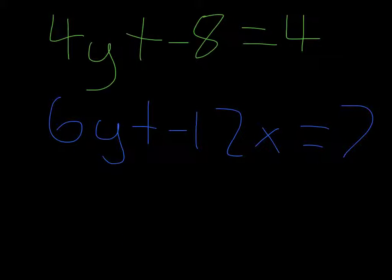So here we have our two equations in standard form. So it's 4y plus negative 8x equals 4, and 6y plus negative 12x equals 7.